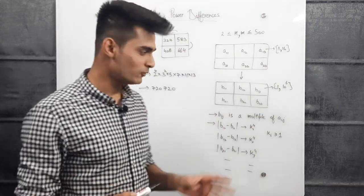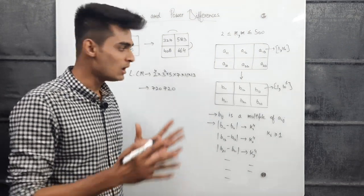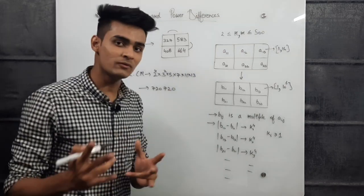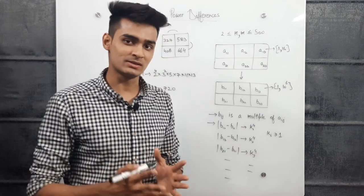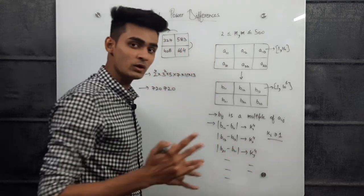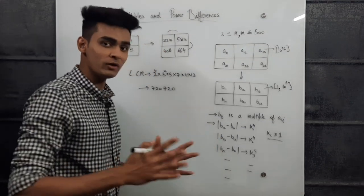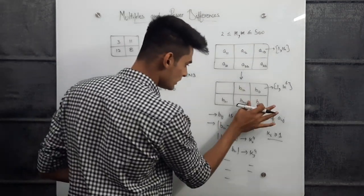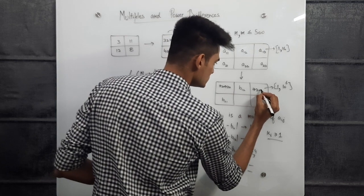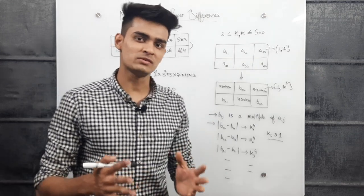We can fill the entire array with 720720, since it's the LCM of all numbers 1 to 16 and therefore a multiple of every a_ij. However, the absolute difference between adjacent elements would be 0, which is 0^4 — but since k must be greater than 1, we cannot fill the complete array with this value. Instead, we fill every alternating element with 720720.